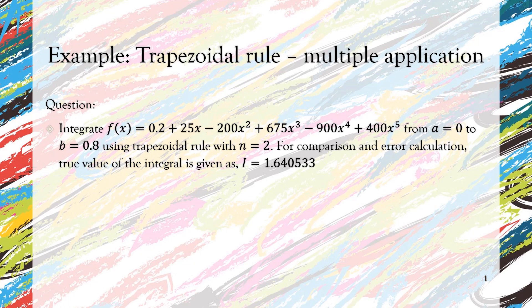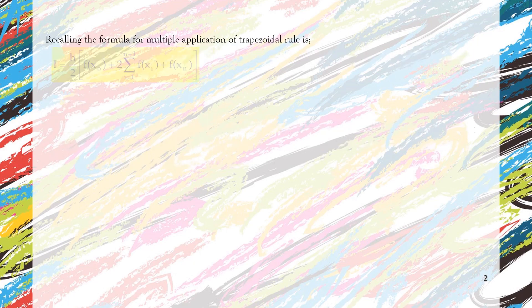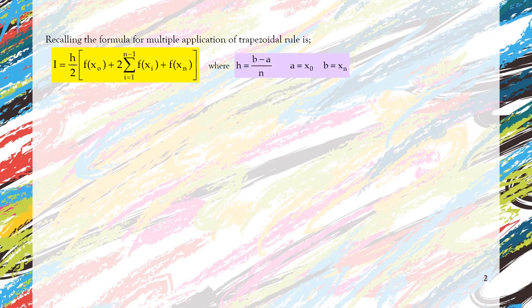So let's start by recalling the formula for multiple application of trapezoidal rule. There it is, where we have h. There is no h in single application of trapezoidal rule, but for multiple application we have this term h which is equal to b minus a divided by n.